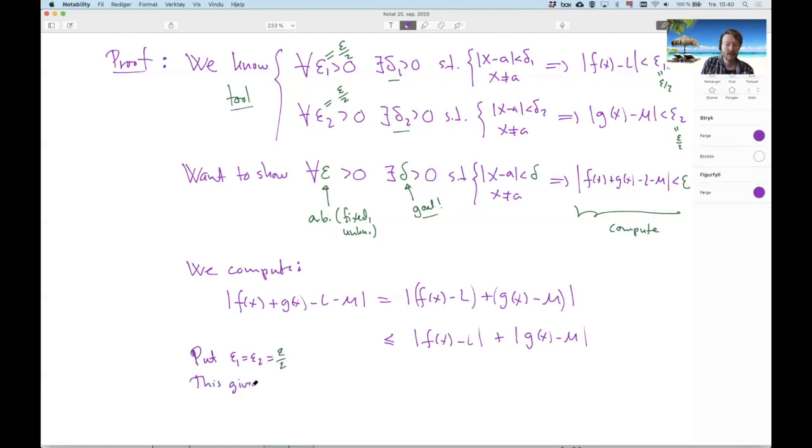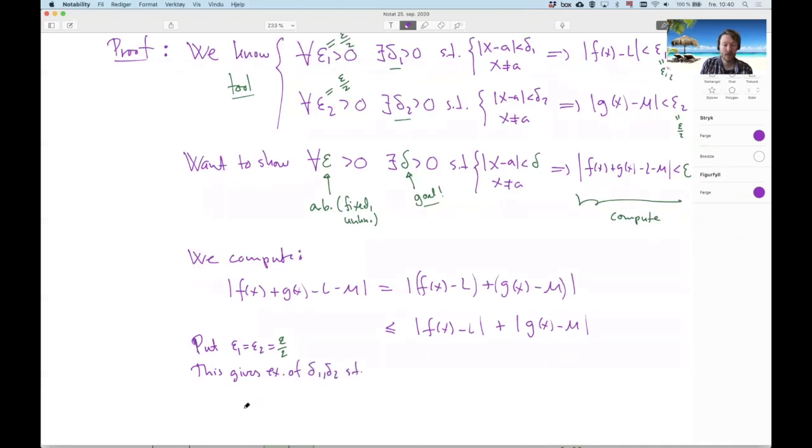This gives existence of delta one, delta two, such that when x minus A is smaller than delta one, and x minus A is smaller than delta two, and x minus A is not zero, these three things imply that this is less than epsilon half, and this other thing is less than epsilon half. So I get epsilon here. So all of this is less than epsilon. Yay, I win.